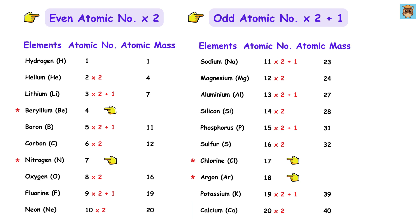Now let us look at the four elements we skipped earlier. Their actual values are: beryllium is 9, nitrogen is 14, chlorine is 35.5, and argon is 40.